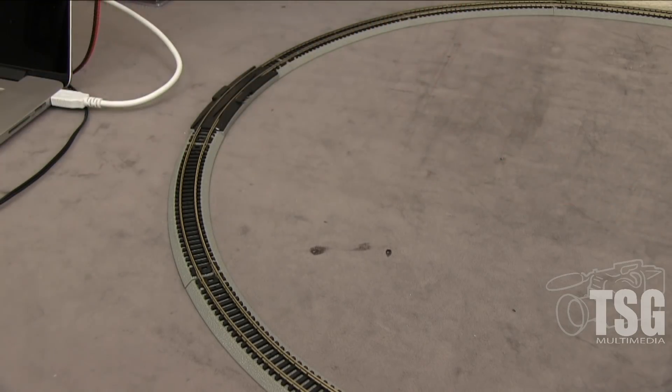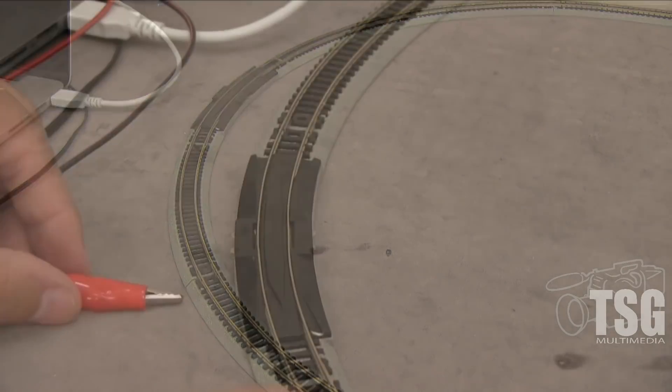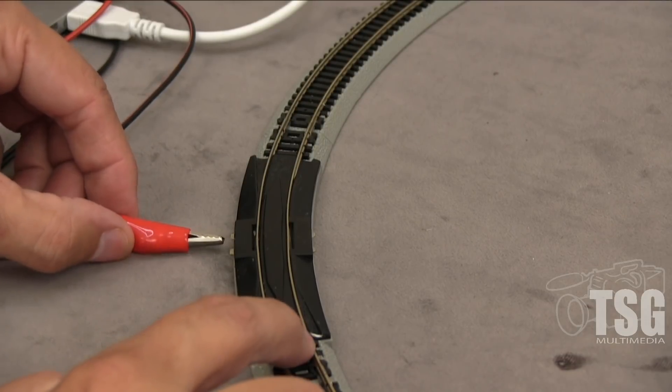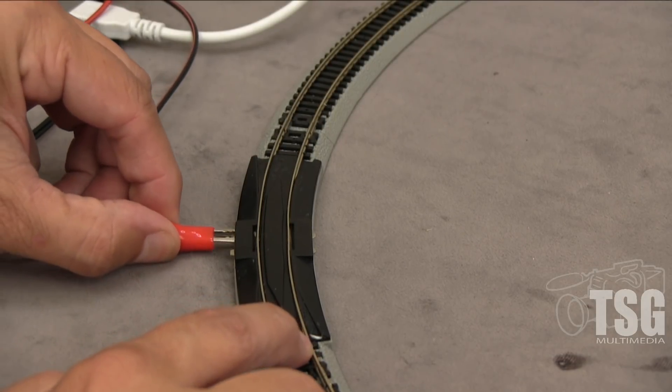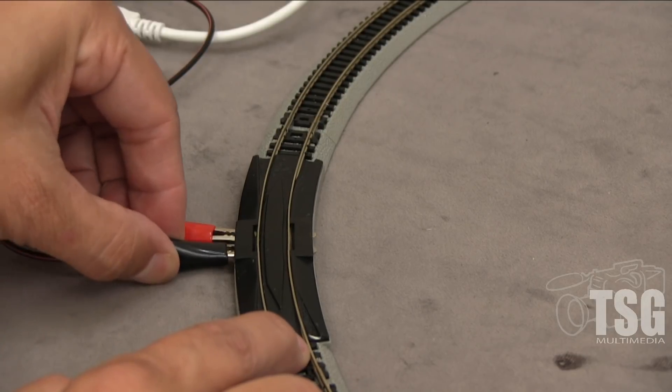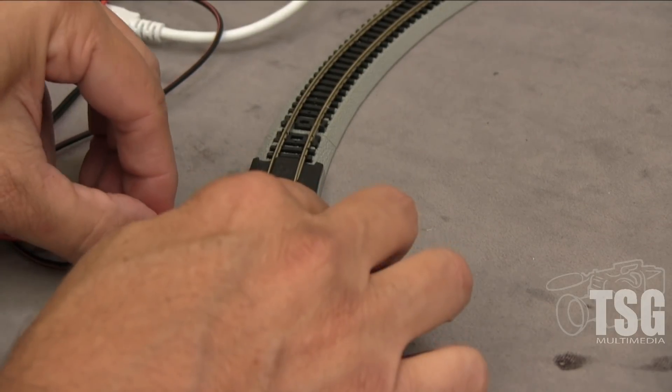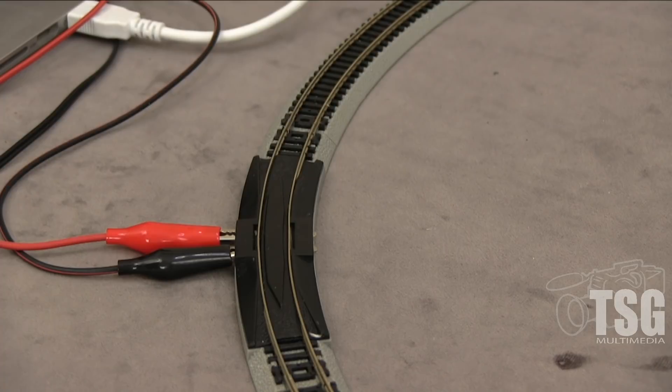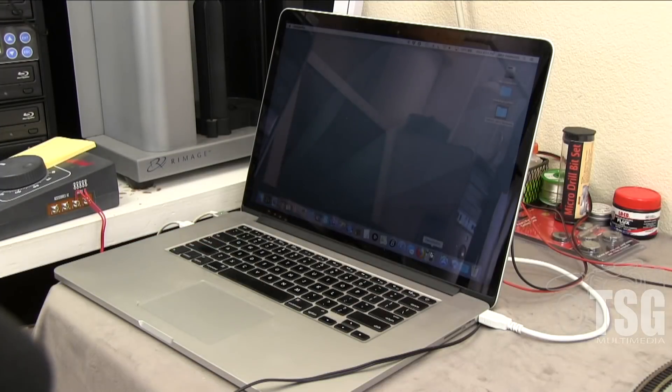So that's all connected. Now I just need to put the alligator clips onto the track. I don't think it really matters which one is red and which one is black. They just have to have a positive connection. That'll do the trick.